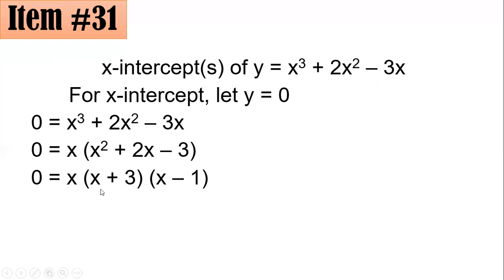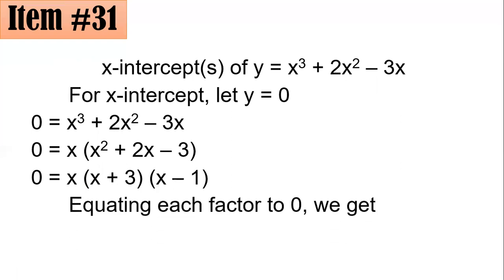And you could see the product of these three factors is equal to 0. And by the 0 property of multiplication, any of these factors is 0. So equating each of them to 0, we get x equals 0, x plus 3 equals 0, we get x equals negative 3, x minus 1 equals 0, we get x equals 1. Letter C.